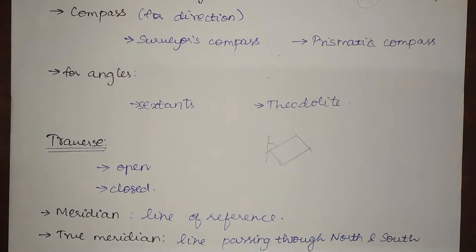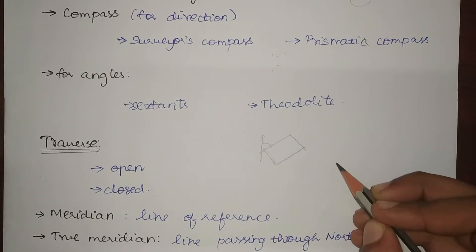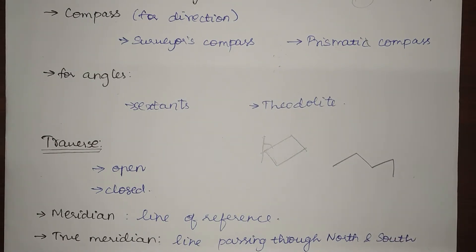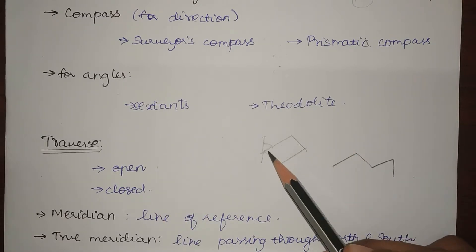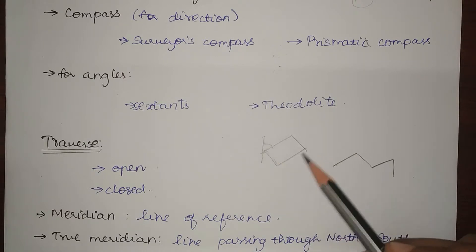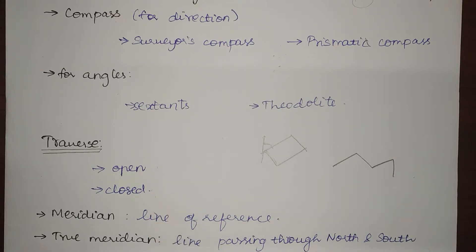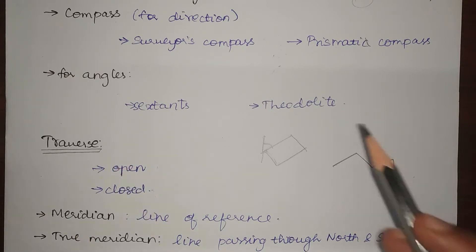The first type of traverse is the open traverse. In an open traverse, we start at a point and end at an entirely different point. This is called an open traverse. A closed traverse is where we start at a point and again end at the same point, forming a circuit. The closed traverse always gives more accuracy and has more checks available.